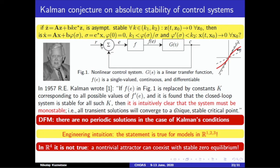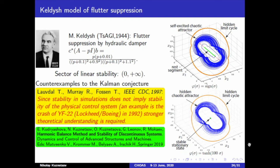We developed a special analytical-numerical procedure which allows us to construct a series of counter-examples to the Kalman conjecture. One interesting counter-example was found in the famous Keldysh model of flutter suppression. In 1944, Mstislav Keldysh, who later became president of the Russian Academy of Science, studied a non-linear model of flutter suppression for aircraft control systems. At that time, the only general method available to study stability and oscillations in the discontinuous model was the harmonic balance, which Keldysh used, noting in his paper that his analysis is not rigorous. Recently, we found parameters in the Keldysh model corresponding to the existence of hidden attractors.